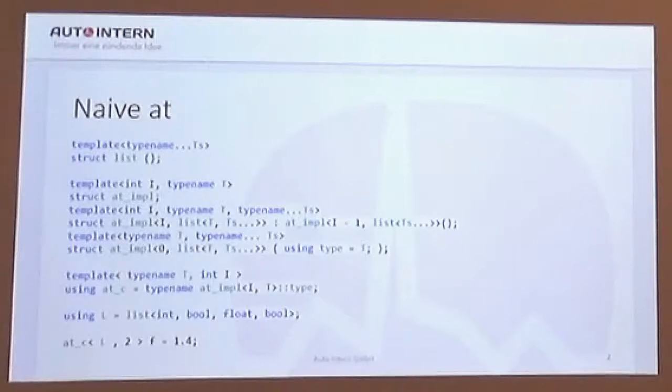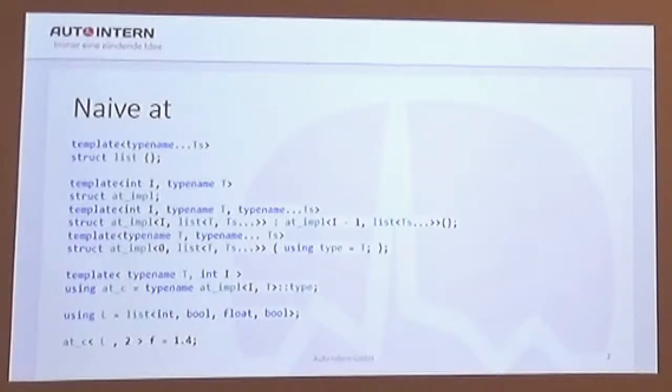You see we're deriving from at impl with one type less, right? And that's a type. We have to remember its point of instantiation. We have to allocate memory for it in the compiler because it will live forever. That's not efficient because we don't care about all these intermediate types.